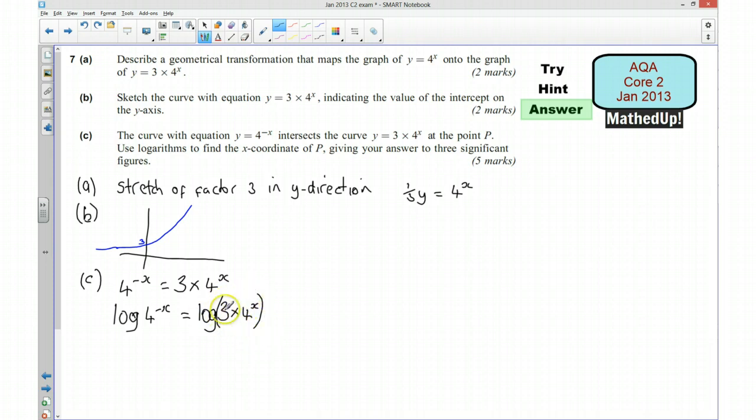And I can separate this logarithm here. So that's going to be log 3 plus log 4 to the x. And I can take this power in front of my logarithm. So I'm going to have minus x log 4 equal to log 3 plus x log 4.